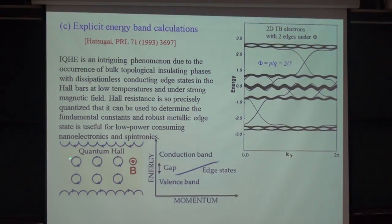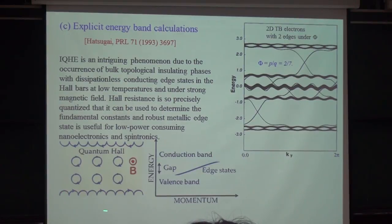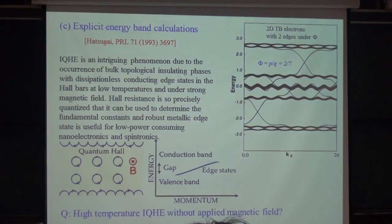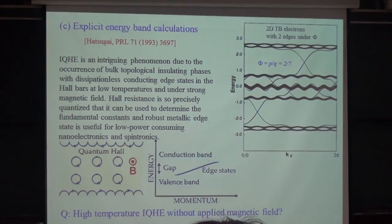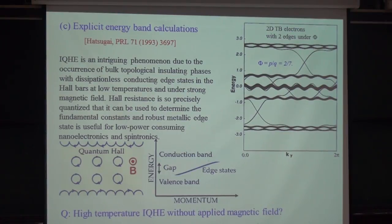In a cartoon picture, because of the strong magnetic field, electrons cannot move freely and can only do circular motion. However, on the edge, because of the Lorentz force, electrons can only go forward — they can only go one direction — so we have this chiral current. The question is, we observe this quantum Hall effect only at very low temperatures and in very strong magnetic fields. If we want any application, that's very difficult. People immediately ask: can we have a high-temperature version of this quantum Hall effect without a magnetic field?